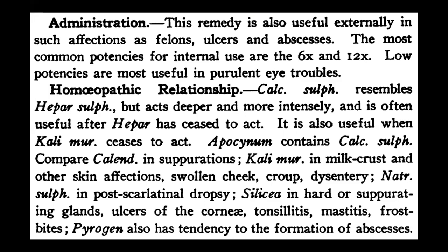Now the homeopathic relationships of Calcarea sulph — these are very important, sentence by sentence. Calcarea sulph resembles Hepar sulph but acts deeper and more intensely, and is often useful after Hepar has ceased to act. So if you have given Hepar sulph and it didn't produce the complete desired result, follow it with Calcarea sulph. It is also useful when Kali mur ceases to act — because Kali mur is the second stage of inflammation, and the third stage starts with Calcarea sulph.